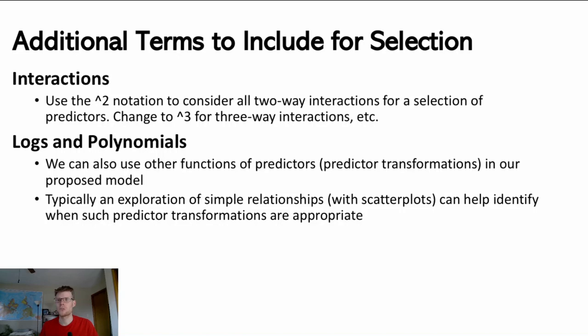As a reminder, interactions are when two predictors or more - a two-way interaction is most common to model - is when the effect of this predictor on the response depends on the value of another predictor, and so there may be value to modeling that interaction in the model. We can easily code in interaction terms with this exponent 2 notation, or exponent 3 if we want to allow for three-way interactions as well.